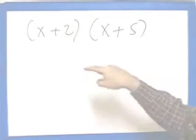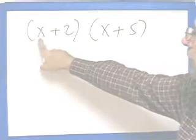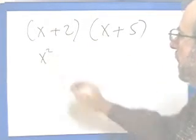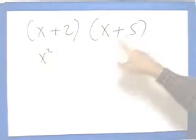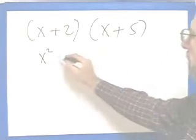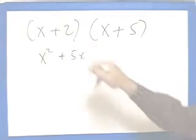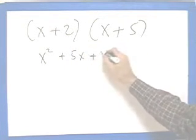So again, we're going to use that method. Some people call FOIL. So the first term, that's x times x, that's x squared. Then it's the outside terms, x times 5, that's 5x. Then the inside terms, that's 2 times x, that's 2x.